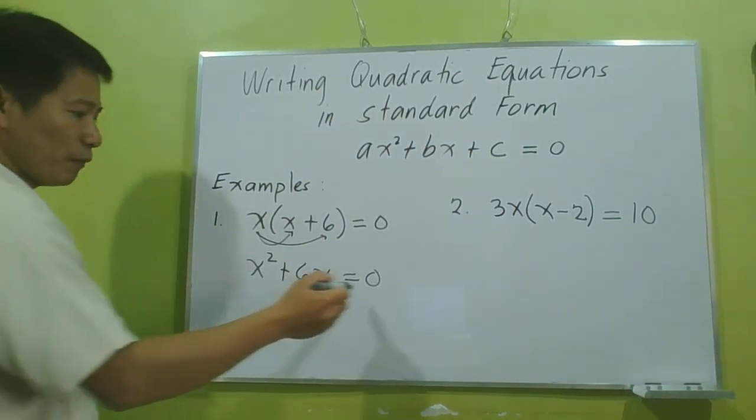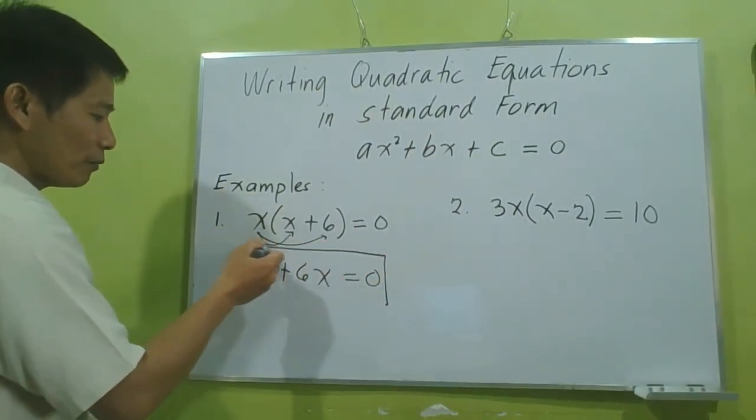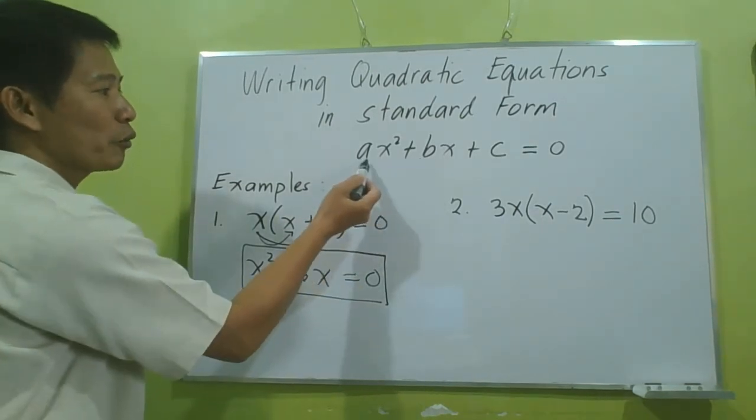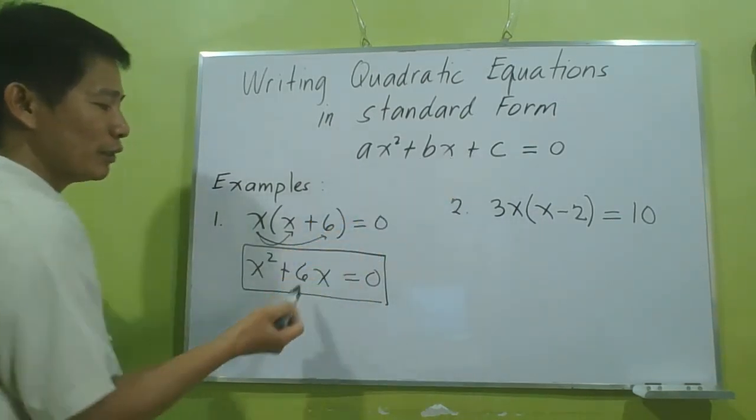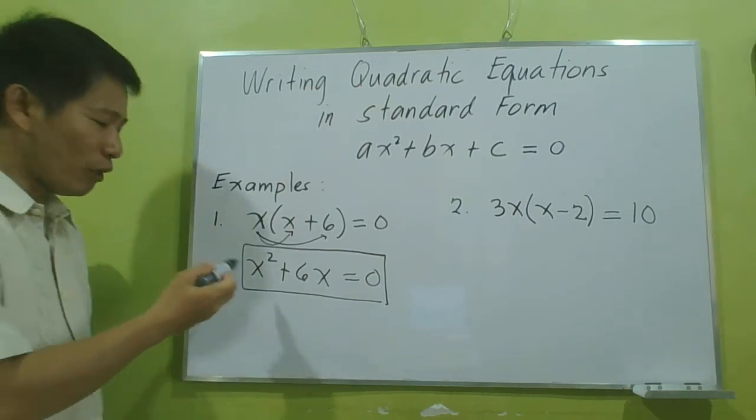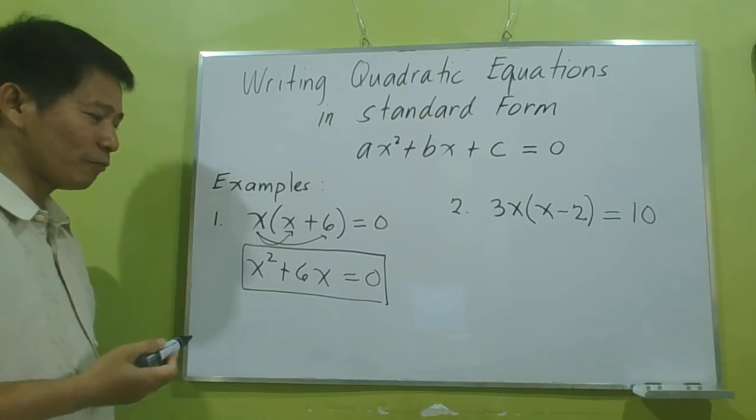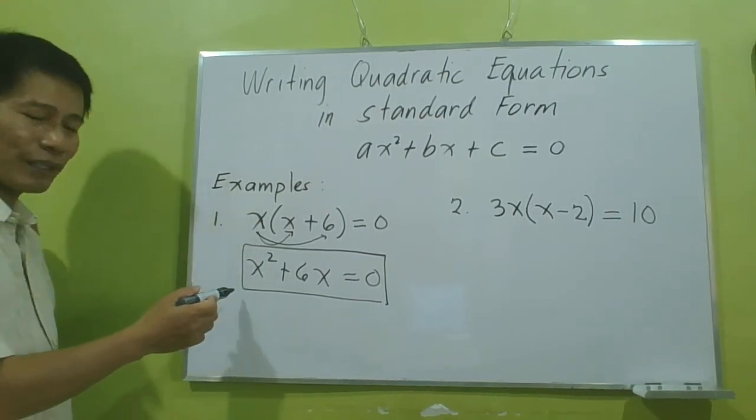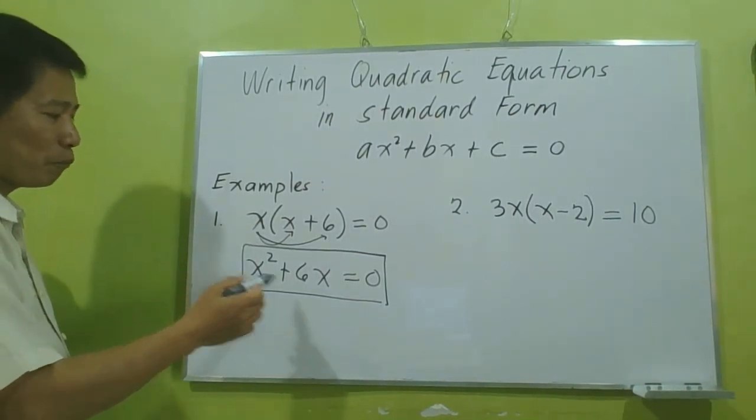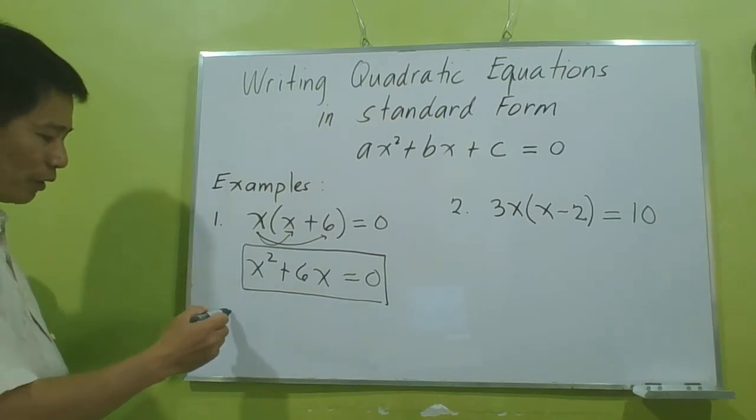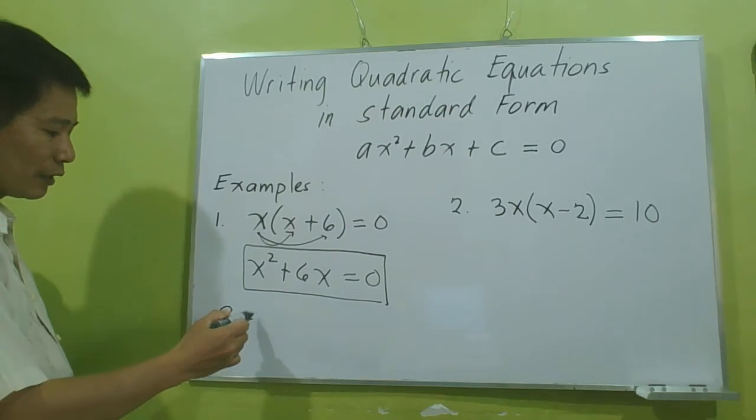Observe that the resulting equation is already in the standard form: ax² + bx + c = 0. However, you will observe also that this is an incomplete quadratic equation. Let us now identify the values of A, B, and C. In our resulting quadratic equation, the value of A is equal to 1.